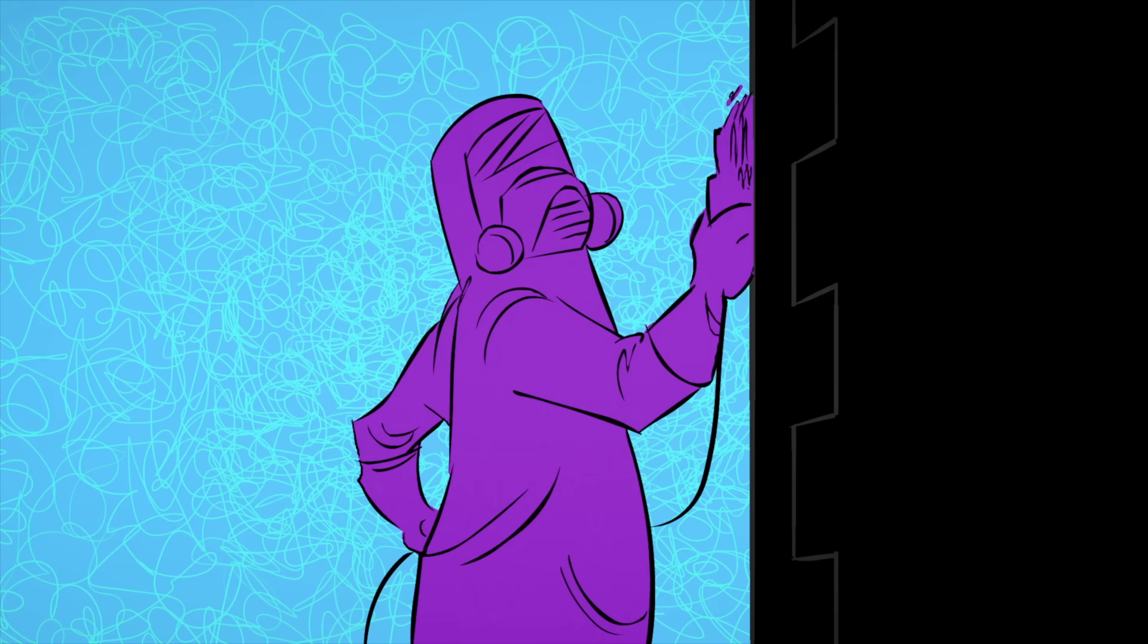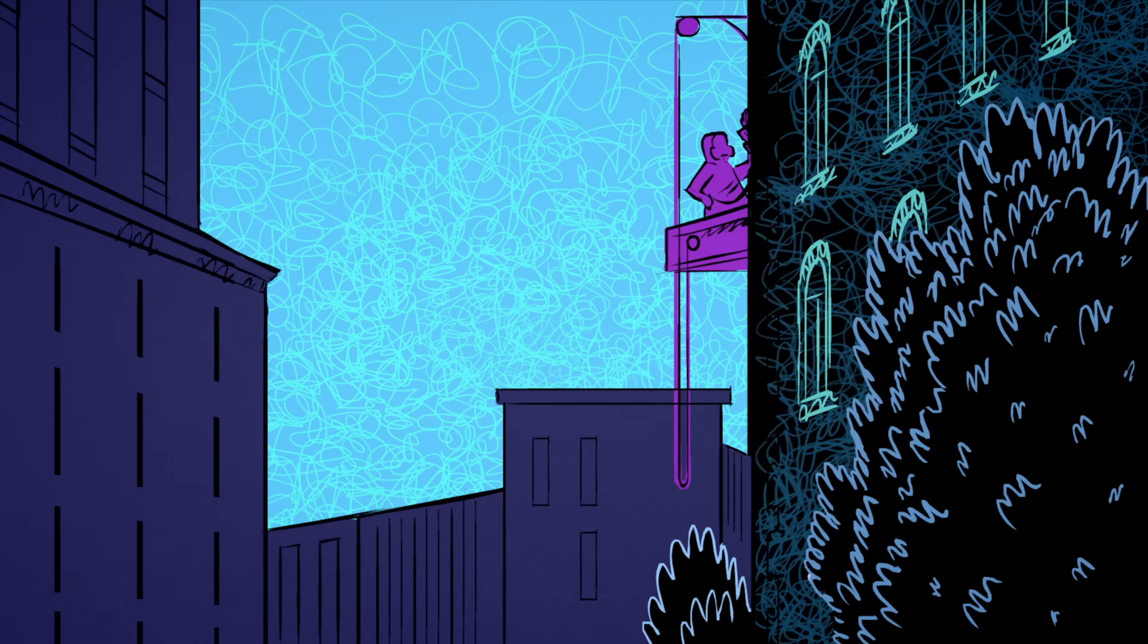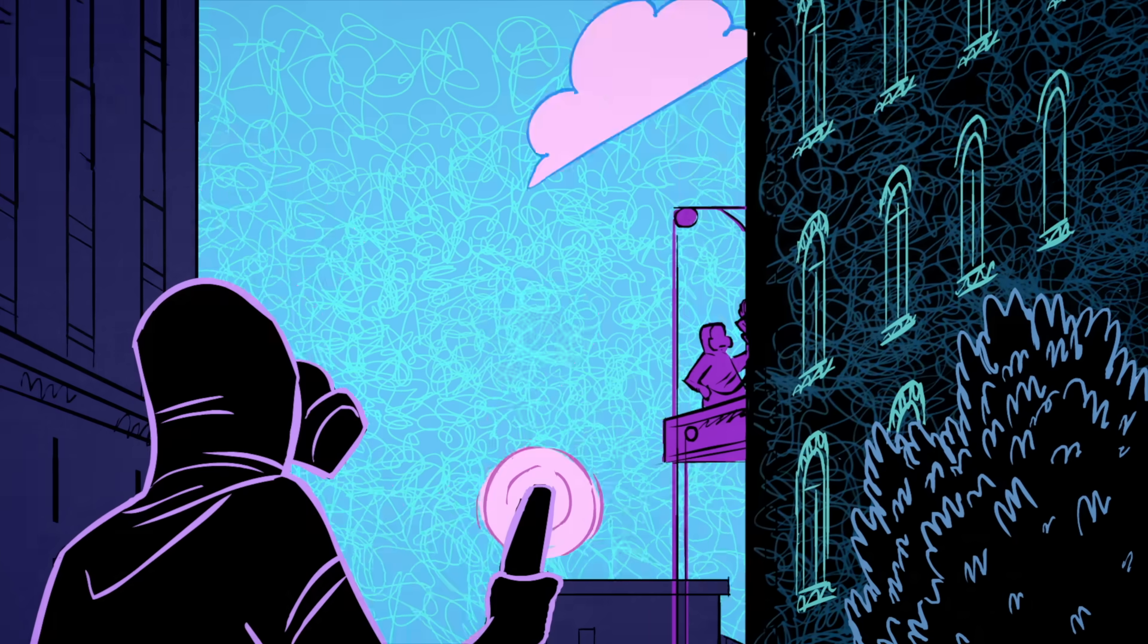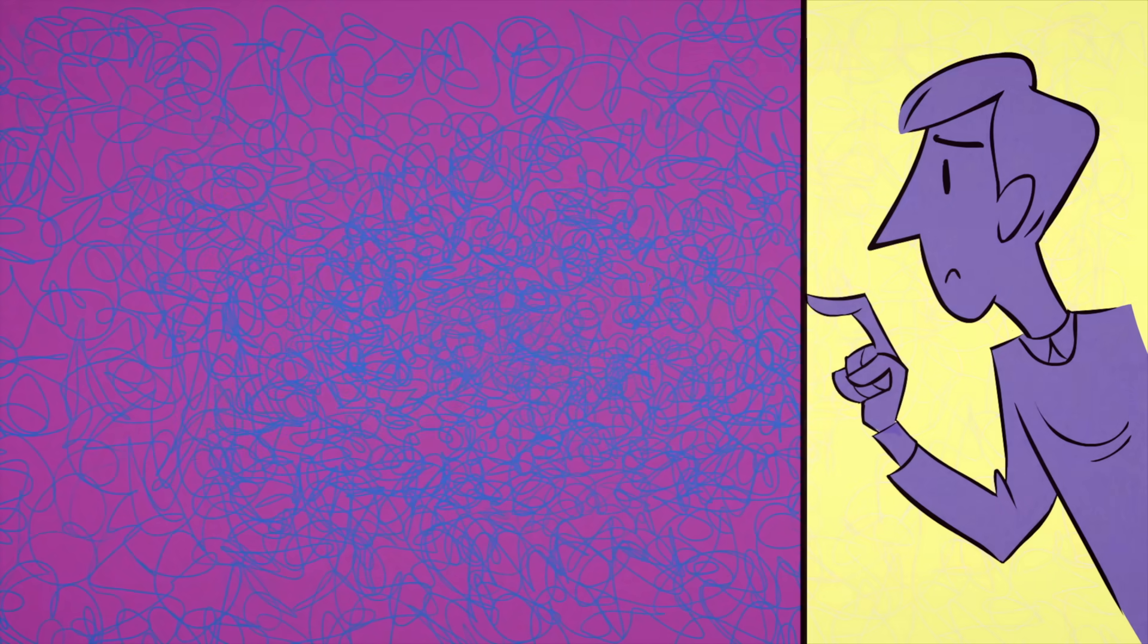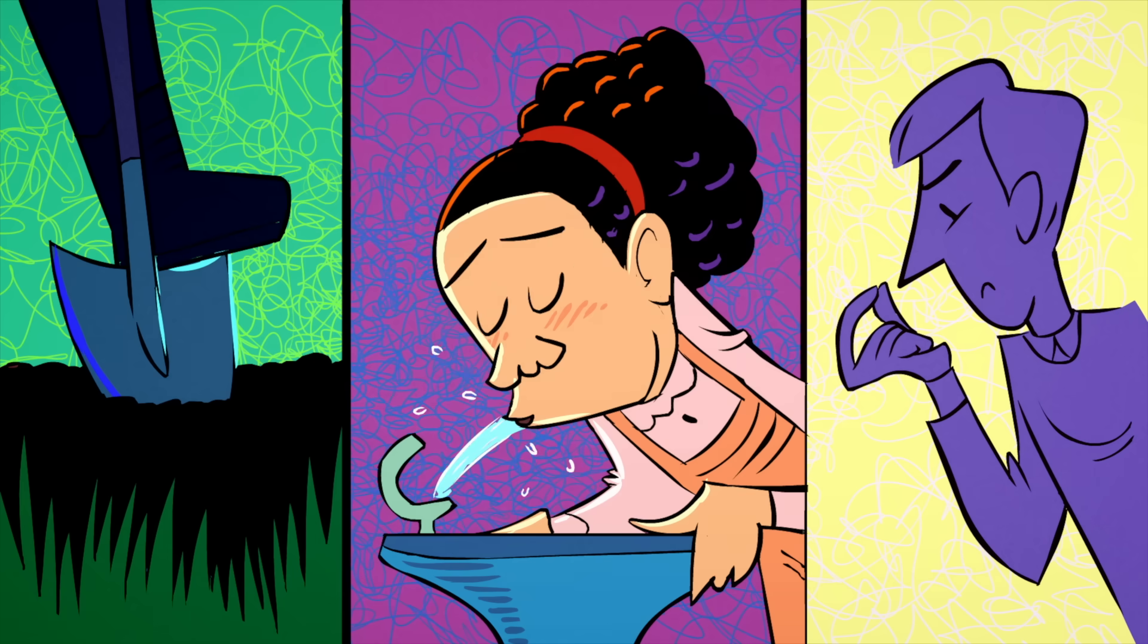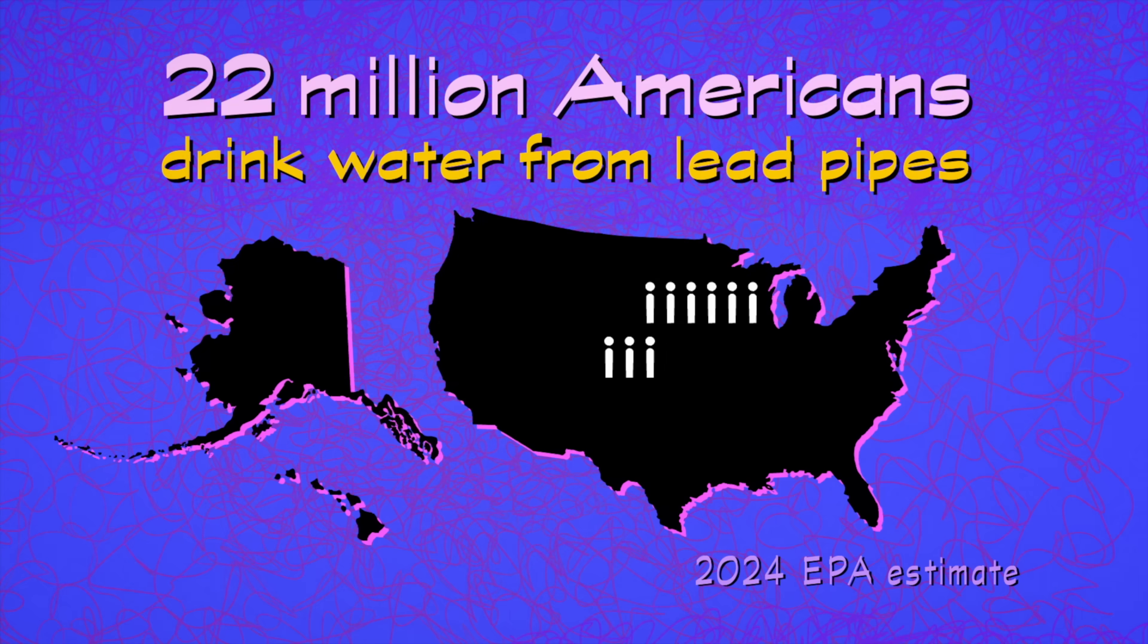And the process of removing lead is dangerous, time-consuming, and costly. As of 2024, lead paint still coats walls and contaminates soil and water worldwide. Tens of millions of people in the U.S. alone drink water from lead pipes.